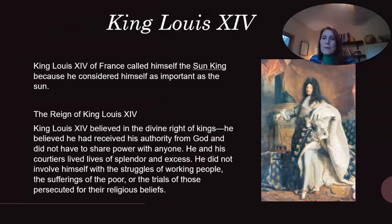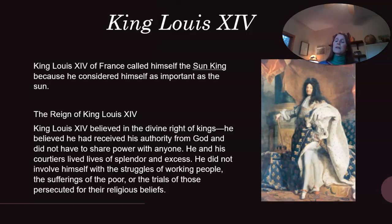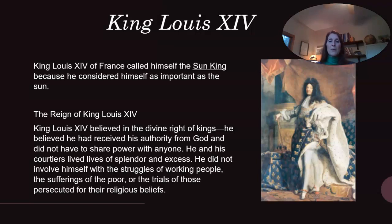King Louis XIV of France called himself the Sun King because he considered himself as important as the Sun. King Louis XIV believed in the divine right of kings — that he had received his authority from God and did not have to share power with anyone else. He and his courtiers lived lives of splendor and excess. He did not involve himself with the struggles of working people, the sufferings of the poor, or the trials of those being persecuted for their religious beliefs.